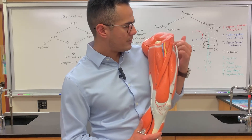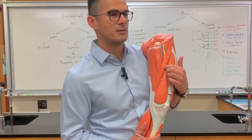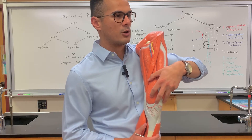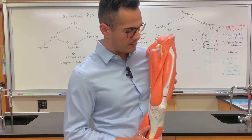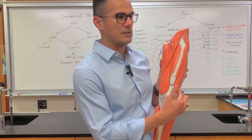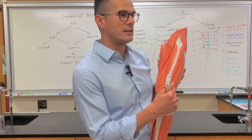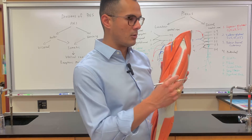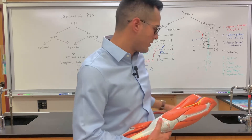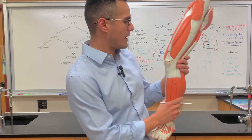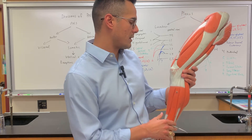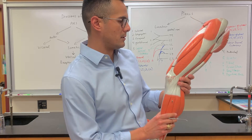The femoral nerve innervates the sartorius, which is number 24. It also innervates the quad muscles. There are four quad muscles you should know: the rectus femoris is in the middle, the vastus medialis is medial, the vastus lateralis is lateral, and the vastus intermedius is deep. All of these muscles are innervated by the femoral nerve. The numbers are: 20 is rectus femoris, 21 is lateralis, 23 is medialis, and 22 is the intermedius.